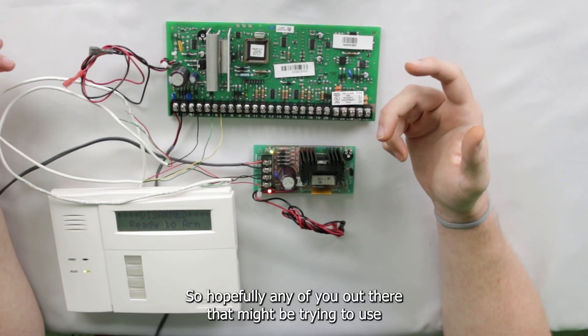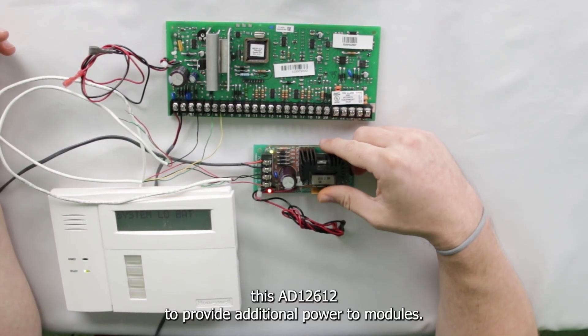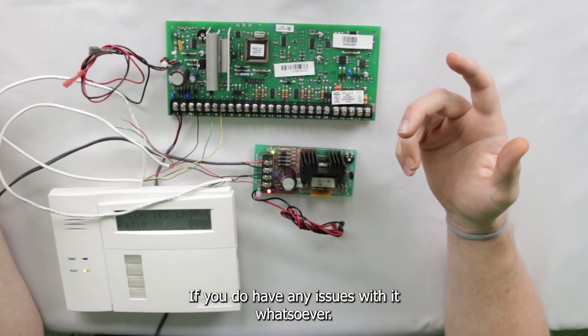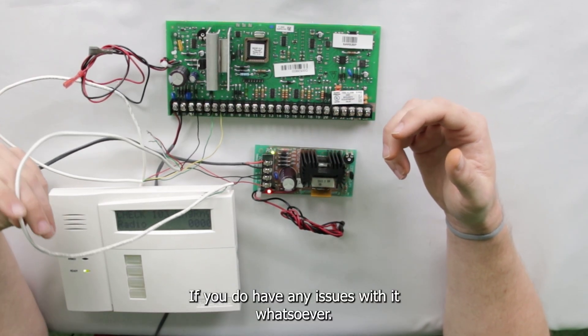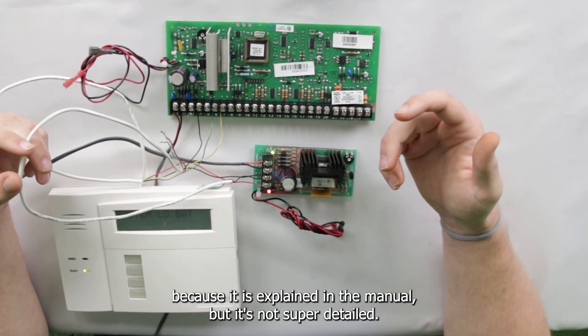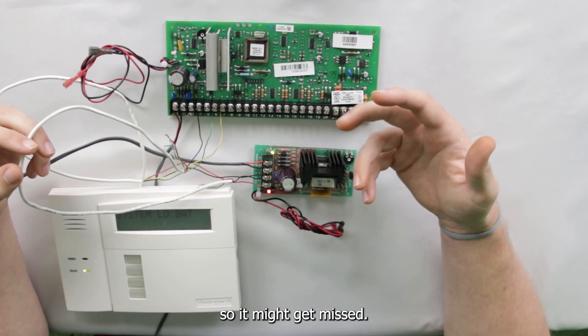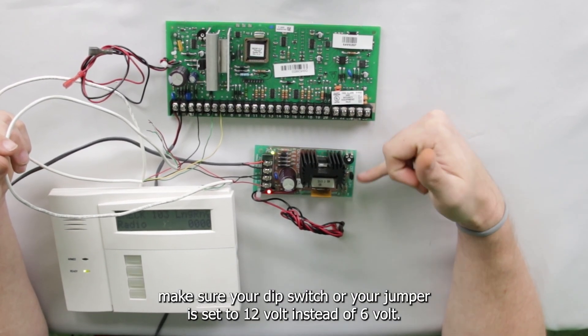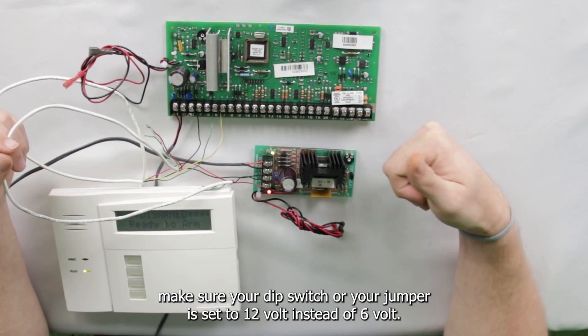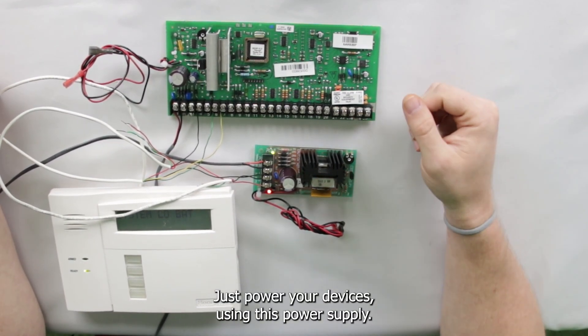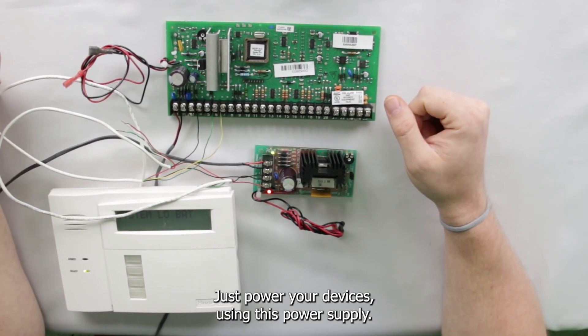So hopefully any of you out there that might be trying to use this AD12612 to provide additional power to modules, if you do have any issues with it whatsoever, nine times out of ten, it's this ground cable because it is explained in the manual, but it's not super detailed, so it might get missed. So make sure you do that. Make sure your dip switch or your jumper is set to 12 volt instead of 6 volt. And it's literally that simple. Just power your devices using this power supply.